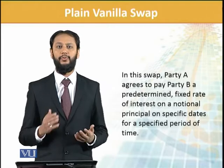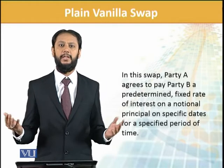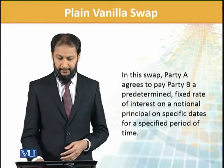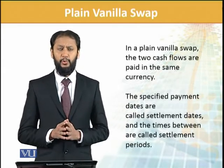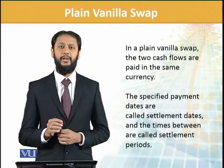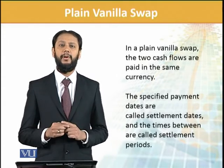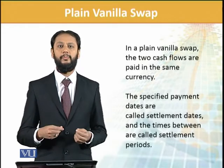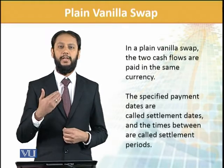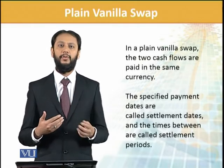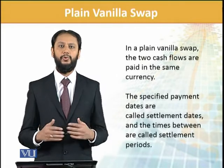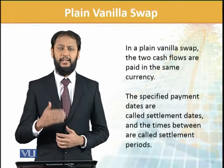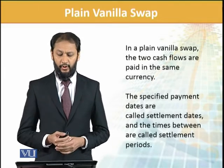The swap is not only bound for three months; it can span multiple years, and dates can be customized. In a plain vanilla swap, two cash flows are paid in the same currency. This means net payment is made — for example, if one party gives 1,000 and the other gives 1,200, only the difference of 200 is exchanged. The specified payment dates are settlement dates.